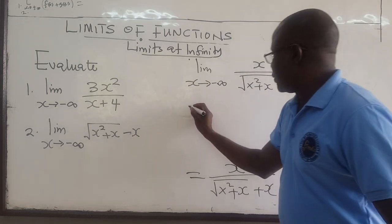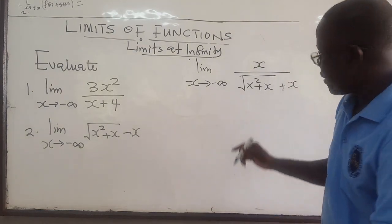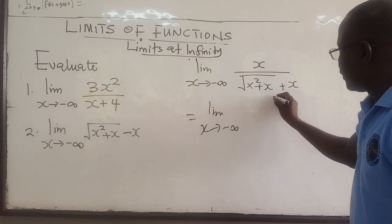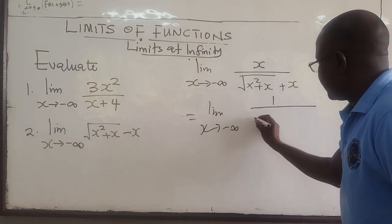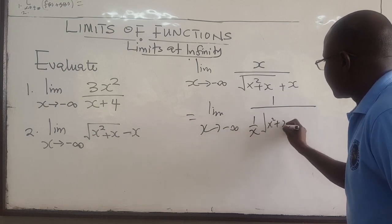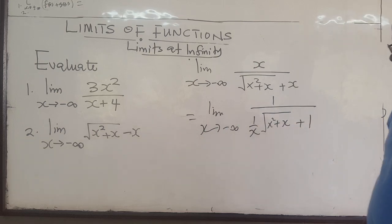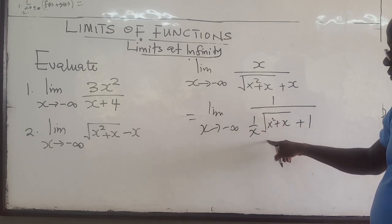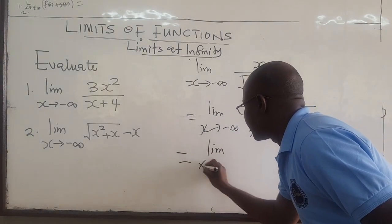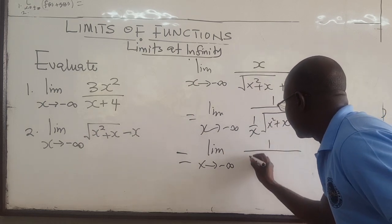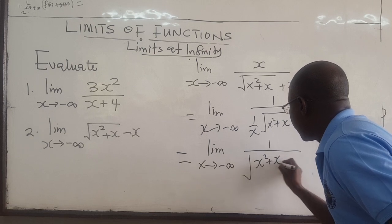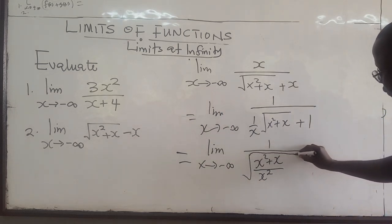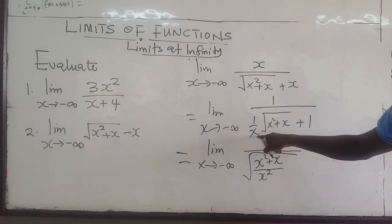So we divide by x and we get the limit as x approaches negative infinity. The numerator divided by x is 1. For the denominator, I take the 1 over x inside the square root, where it becomes 1 over x squared. So this is 1 over x squared times x squared plus x, which gives square root of 1 plus 1 over x, and then plus 1.